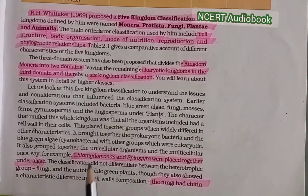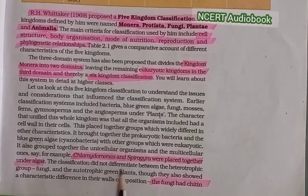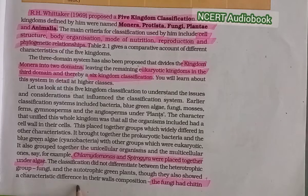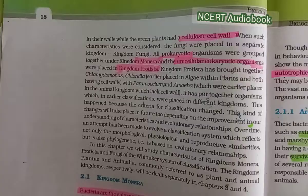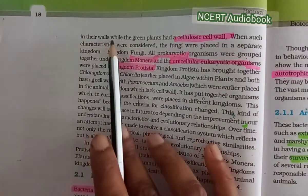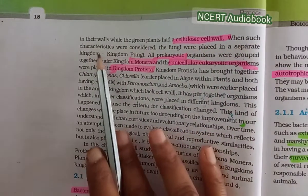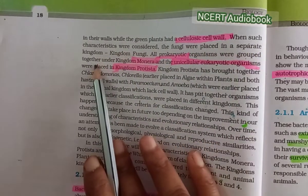For example, Chlamydomonas and Spirogyra were placed together under algae. The classification did not differentiate between the heterotrophic group fungi and the autotrophic green plants, though they also showed characteristic differences in their wall compositions. The fungi had chitin in their walls while the green plants had cellulosic cell walls. When such characteristics were considered, the fungi were placed in a separate kingdom — kingdom Fungi.